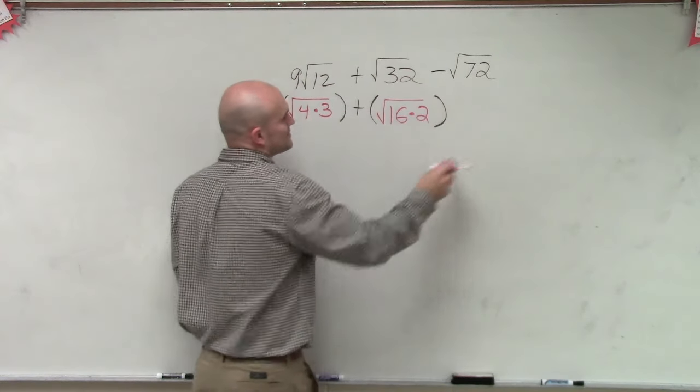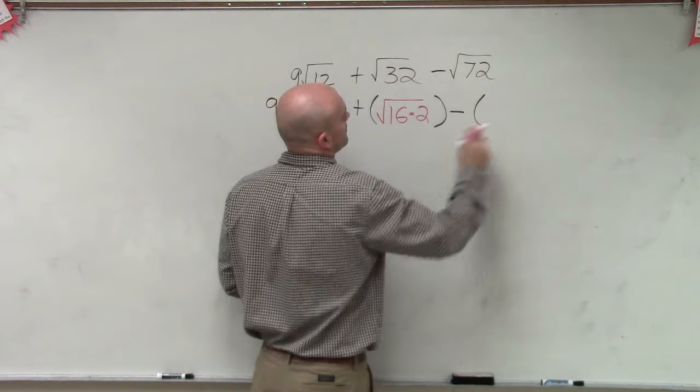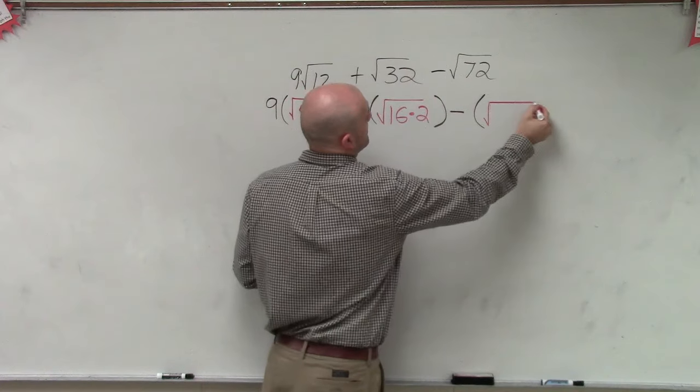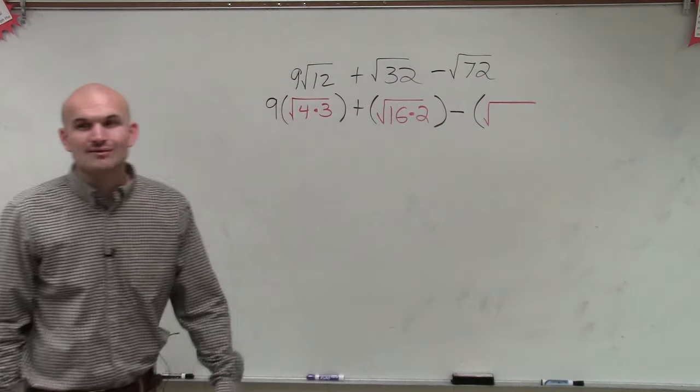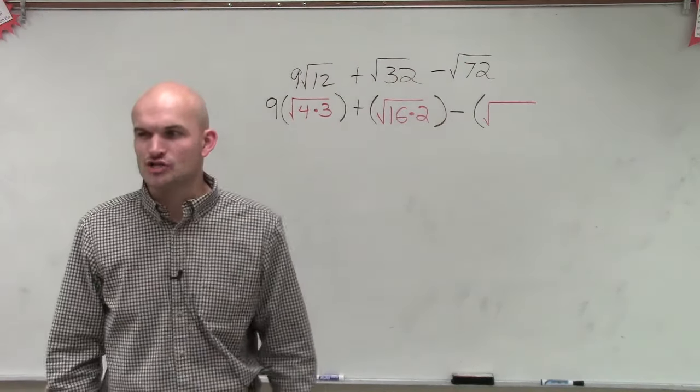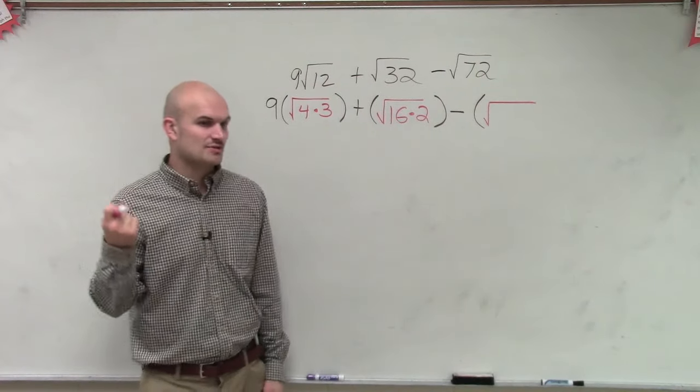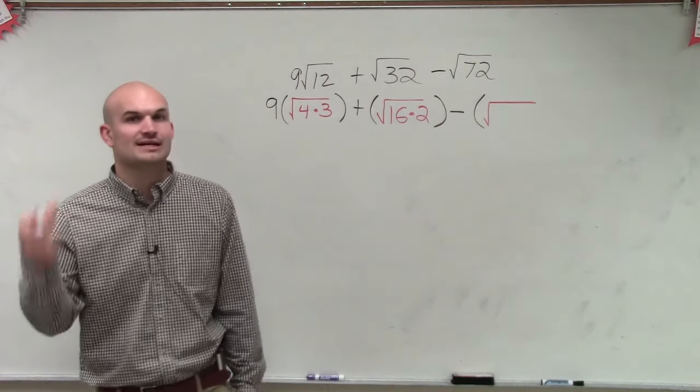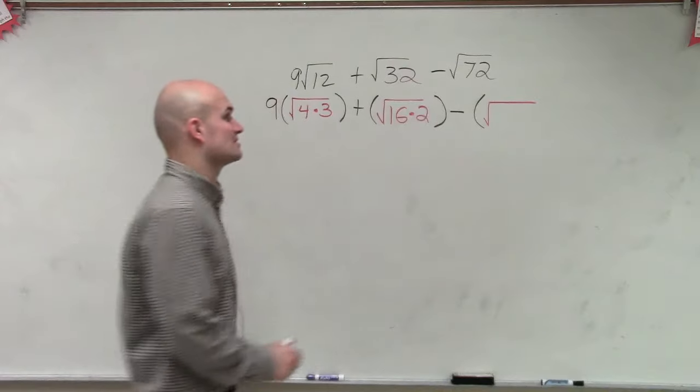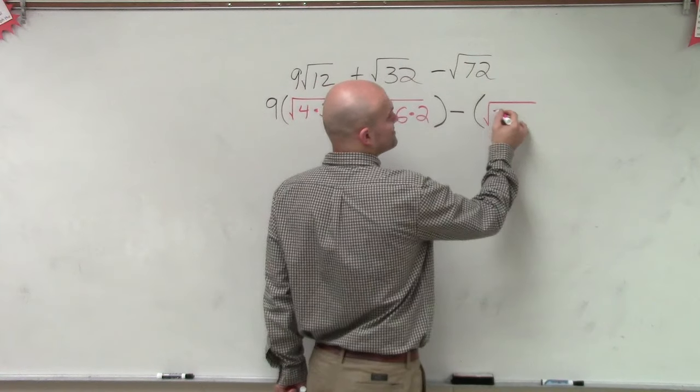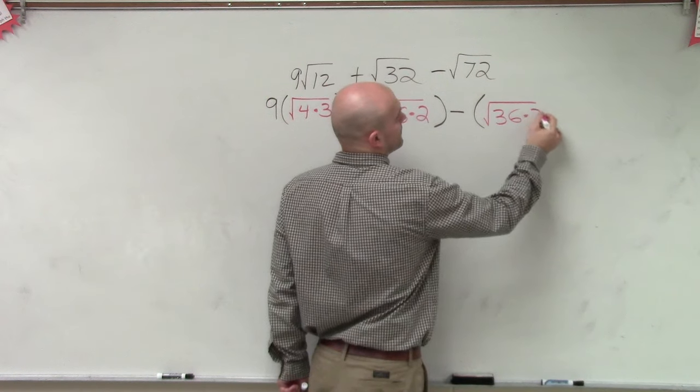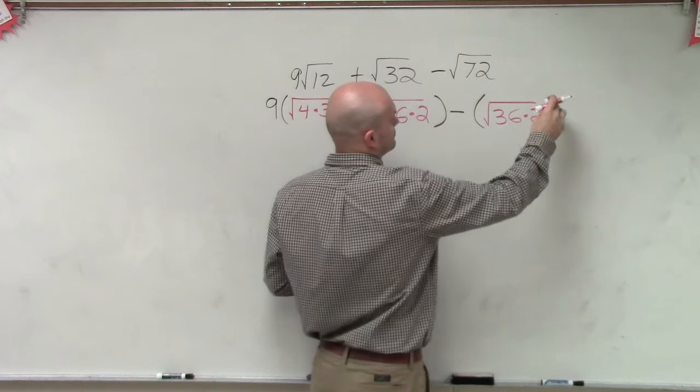And then what about 72? 8 and 9. You could do 8 and 9, but what is the, think if there is there a larger square number? So we have 4, 9, 16, 25, 36. 9 and 8 would work, but then you just have to simplify it again.